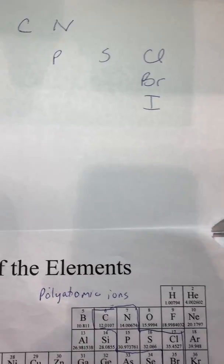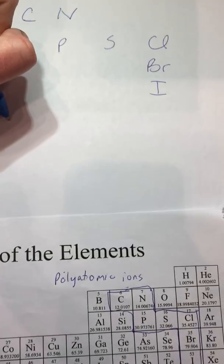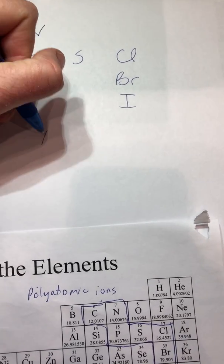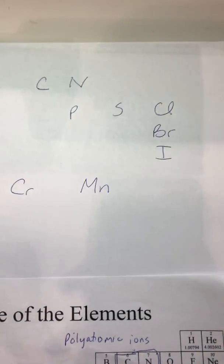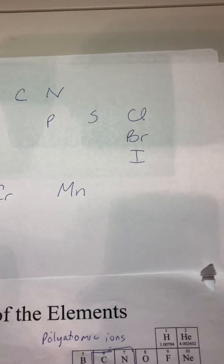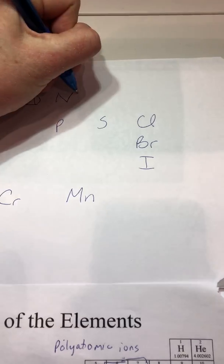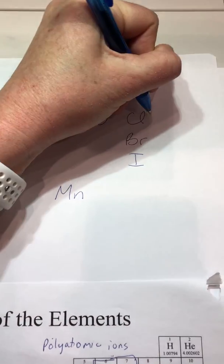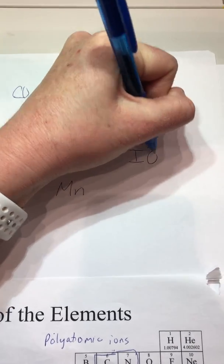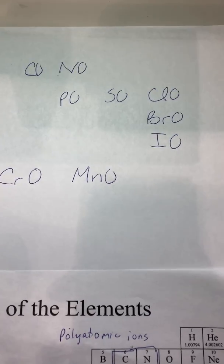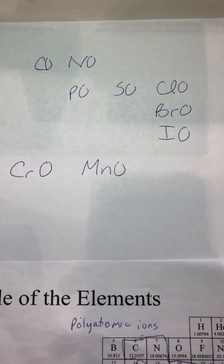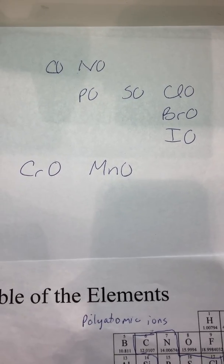And then we're also going to pay attention to those ones that were right over here, the chromium and the manganese. Okay. To each of these we're going to add an oxygen. So we got kono, poso, clobro, io, chromino. That should be fun to say.